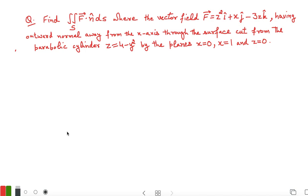Hello everyone, today we are going to solve a numerical on finding flux through a surface for a given vector field. The numerical is equivalent to finding the double integral of the vector field F dot n-cap ds over the surface, where n-cap is the unit outward normal vector to the surface. The vector field is given by z² î + x ĵ − 3z k̂.